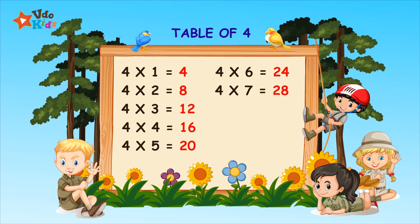4 sevens are 28. 4 eights are 32. 4 nines are 36.